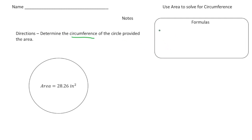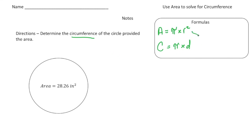Let's write these down. To get the area of a circle, we know it's going to be pi times radius squared. And then to get the circumference of a circle, we know it's going to be pi times the diameter. The important thing is we have to use both these formulas to figure out the circumference. So let's write down: use both.